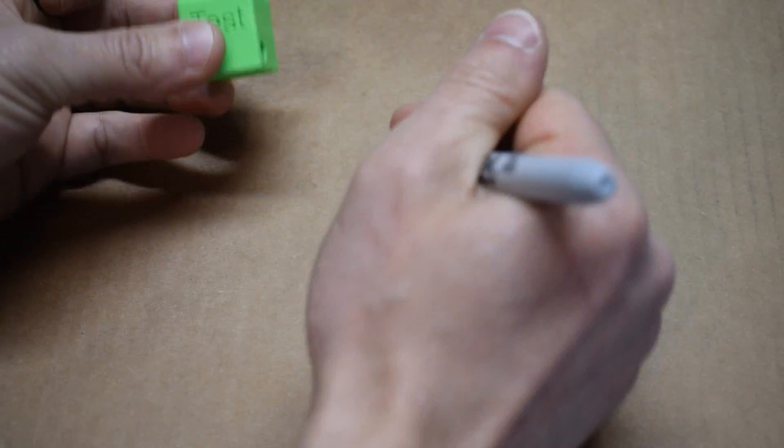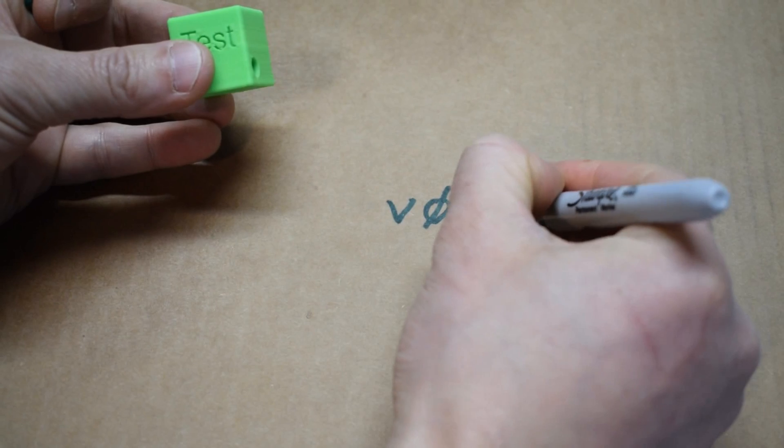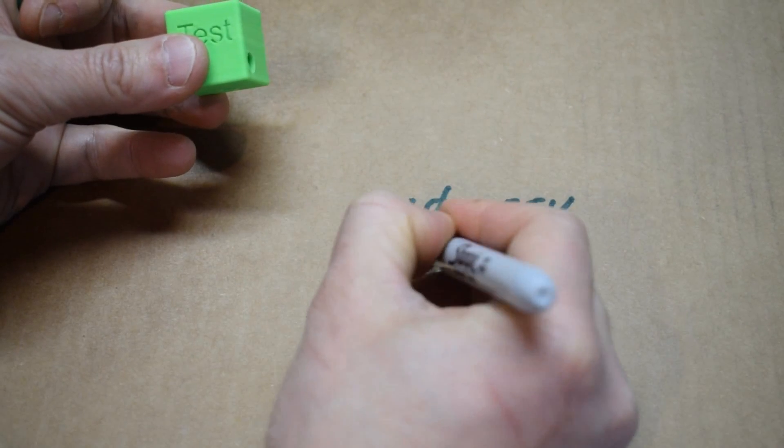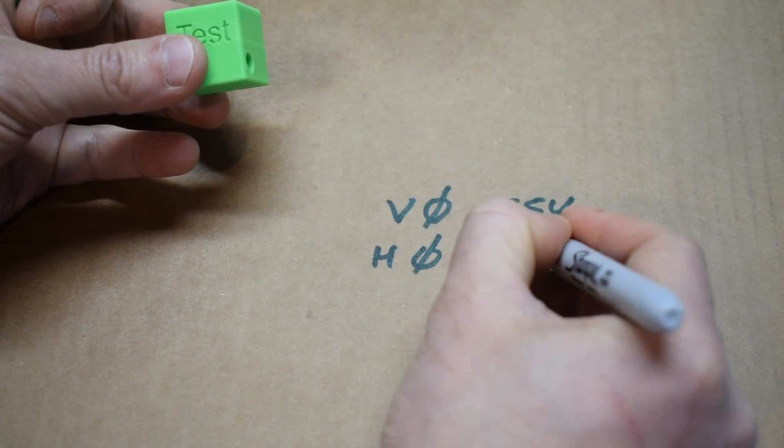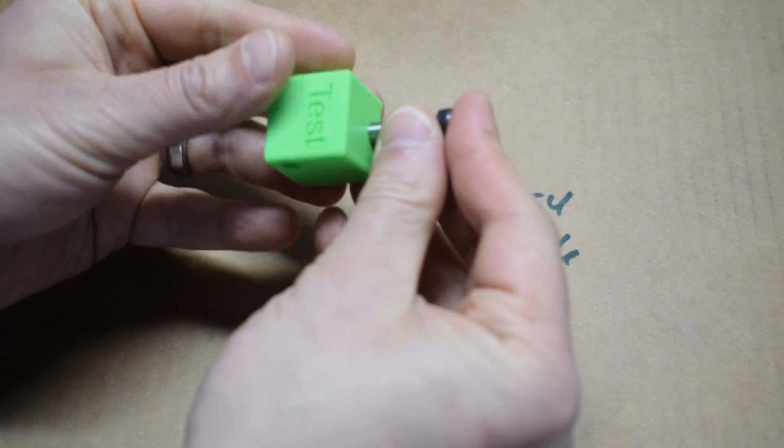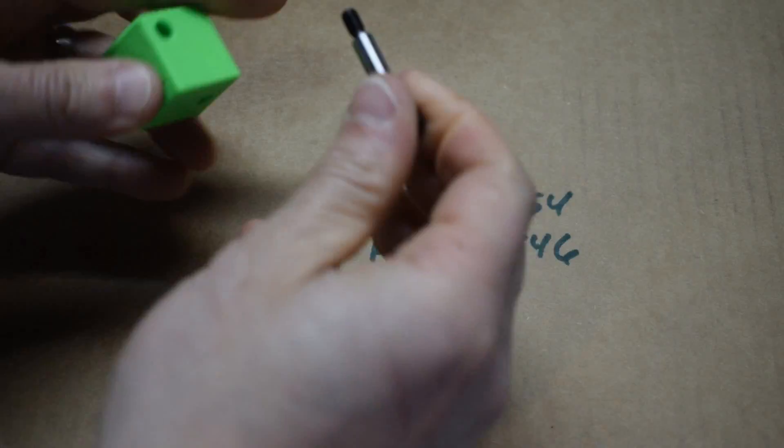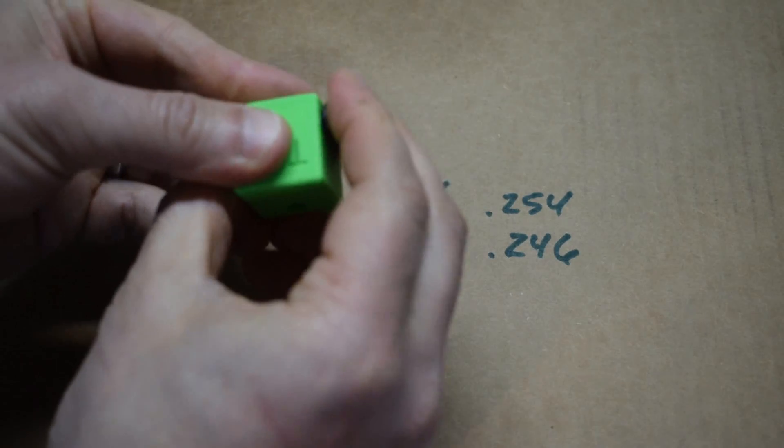So we can test this using our shoulder bolt. Through the vertical hole we fit but we're snug, and through the horizontal hole again fits but snug.